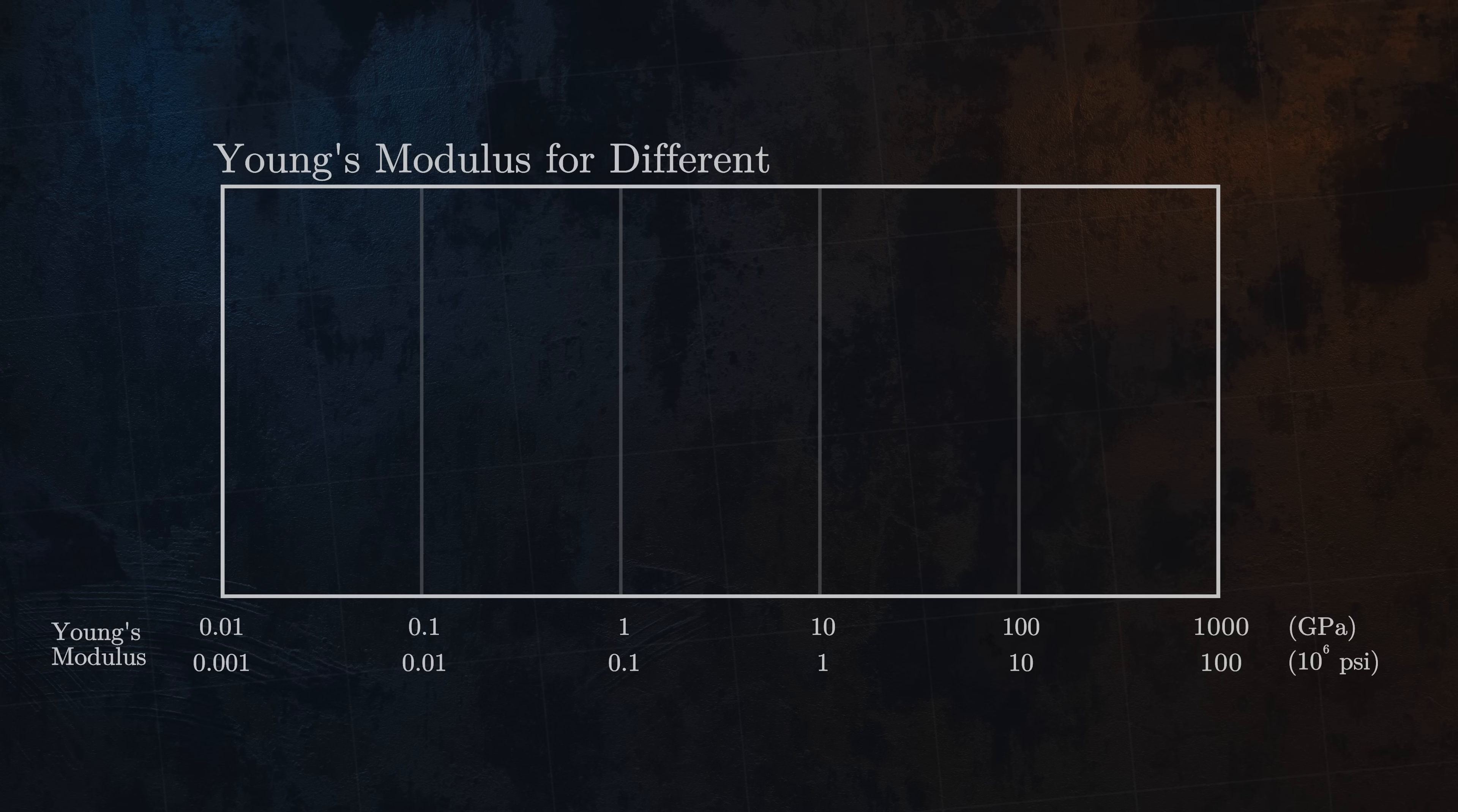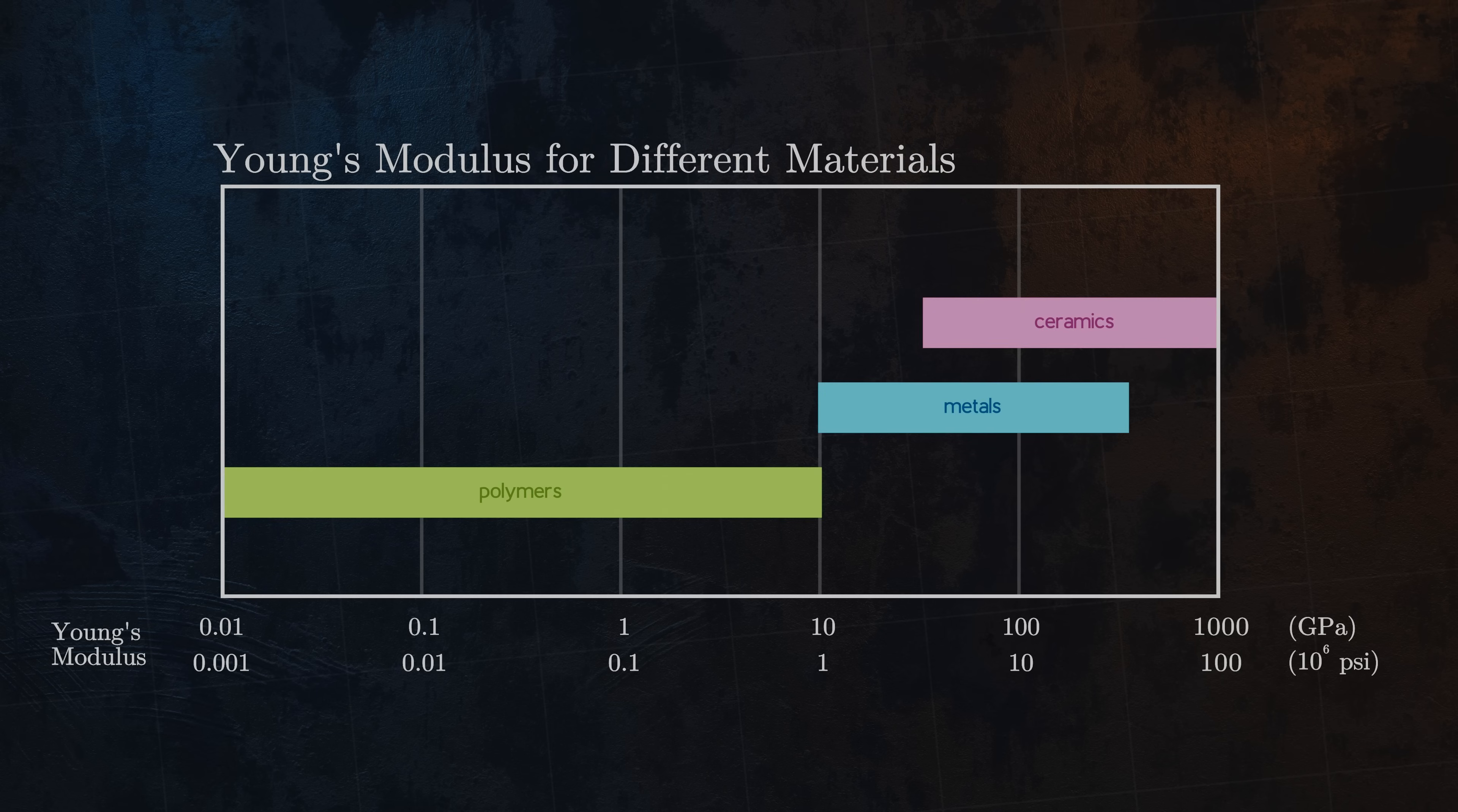This graph shows the range of typical Young's modulus values for polymers, metals, and ceramics. In general, ceramics have higher values of Young's modulus, metals have slightly lower values, and polymers have much lower values.